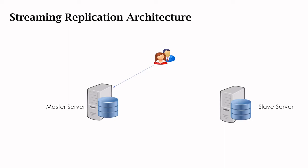Let us first understand the replication architecture. There is a client or application which connects to the master or slave server. The process present on the master server is the WAL sender. The WAL sender basically reads all the WAL records and pushes them to the slave server.